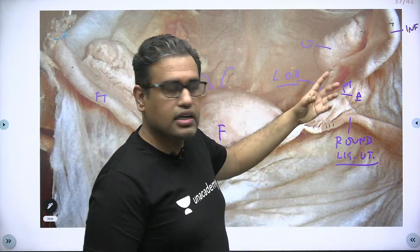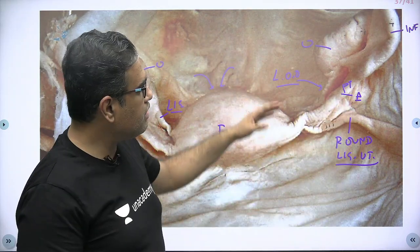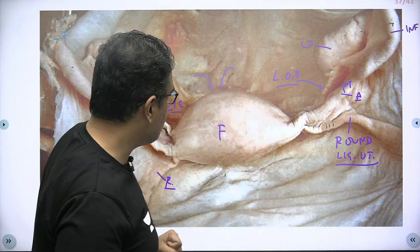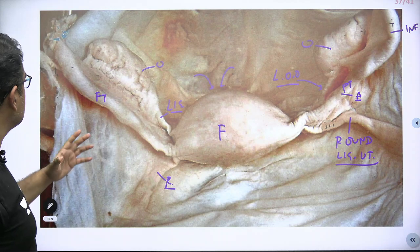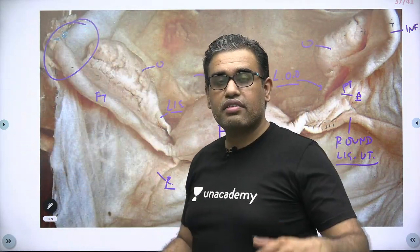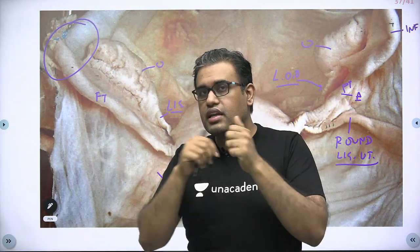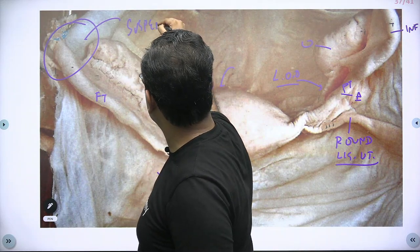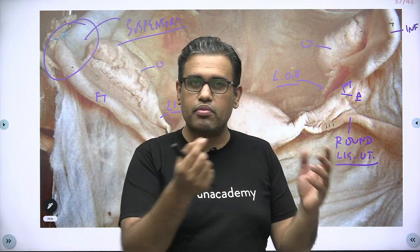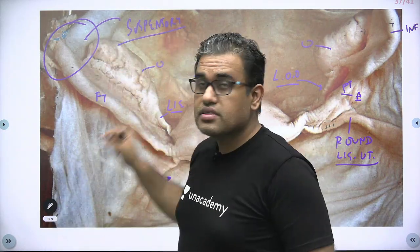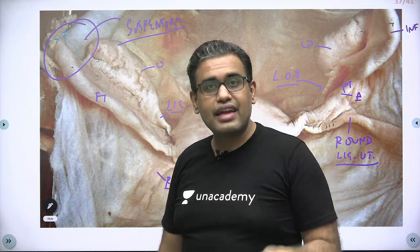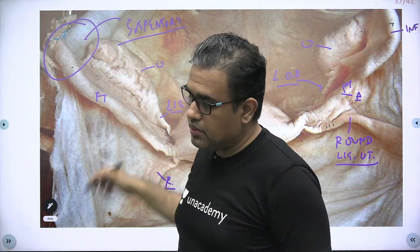Remember, in males the gonads — the testes — descended down through the canal into the scrotum. But in females, they get stuck due to the developing uterus and fallopian tube, which is a derivative of the paramesonephric duct — if you remember your embryology. Now on the sides of the ovary, laterally and above, this area is the suspensory ligament of the ovary. How will the ovary get its nutrition? This suspensory ligament — also known as the infundibulopelvic ligament — carries the ovarian vessels, nerves, and lymphatics to and from the ovary.